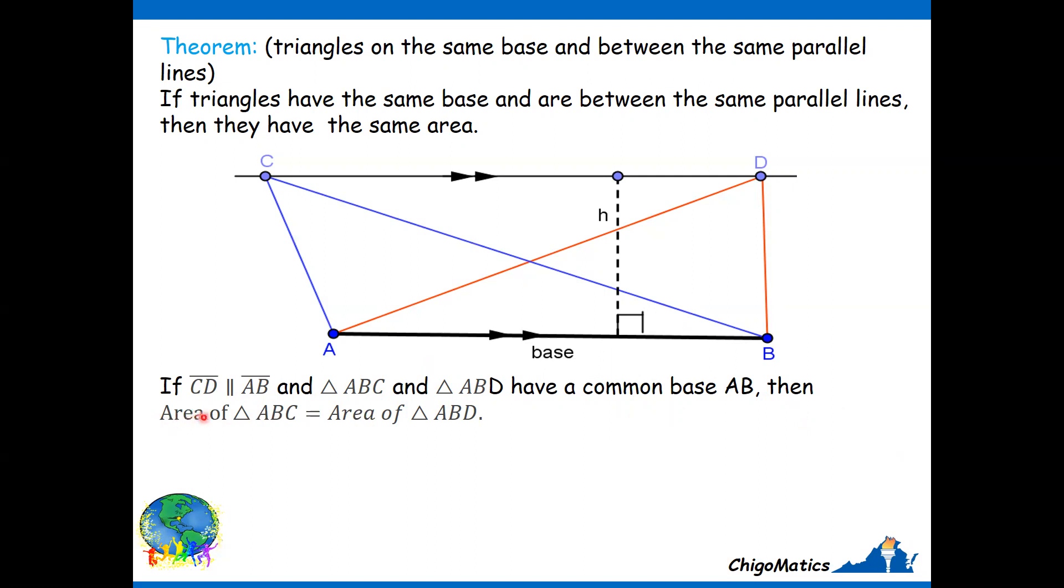Then we can conclude that their areas are the same because the height cannot change for any of the two triangles, because the height is the distance between the two parallel lines.